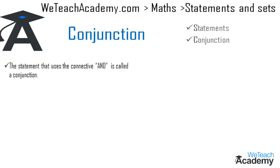The statement that uses the connective 'and' is called a conjunction. The conjunction of statements p and q can be denoted by p ∧ q.